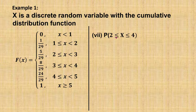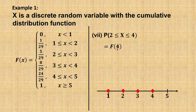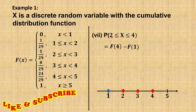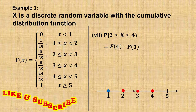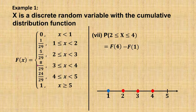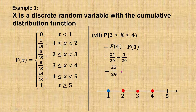Next, find the probability when x is greater than or equal to 2 and less than or equal to 4. Since both 2 and 4 are included, the cumulative probability equals F(4) minus F(1), because we want to keep values 2, 3, and 4, so we subtract F(1). The cumulative F(4) equals 24 over 29, and F(1) equals 1 over 29. After calculating, the answer is 23 over 29.